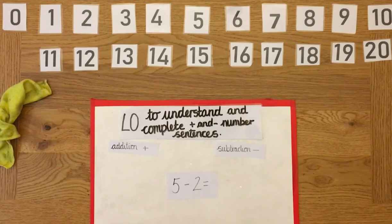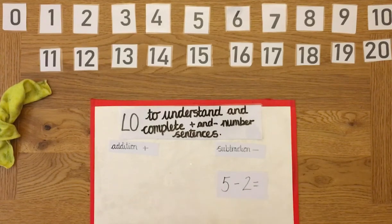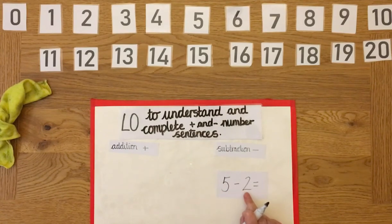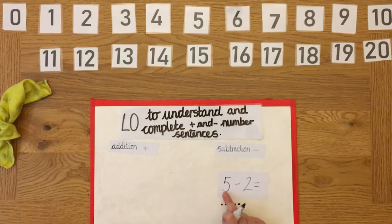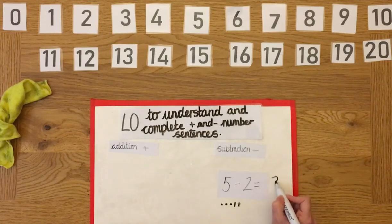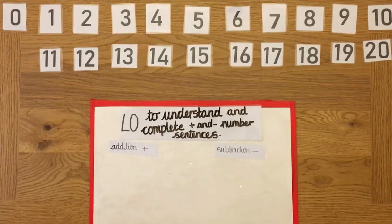What sort of number sentence is this? Is it addition or subtraction? You can see it's a subtraction, so we need to take something away from something. The number sentence is five take away two equals. How many objects would I need? Five: one, two, three, four, five. How many am I taking away? Five take away two equals three. Great job everybody!